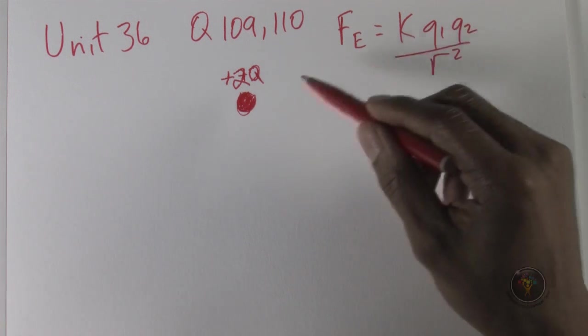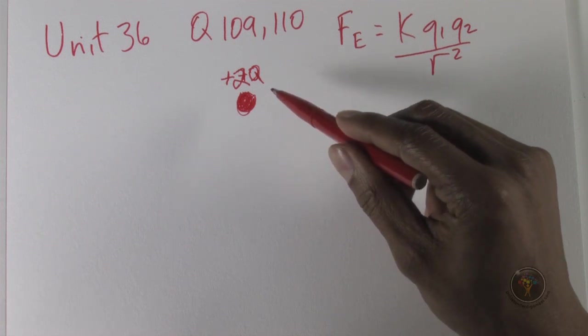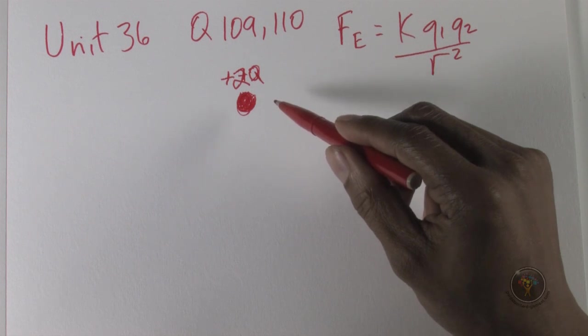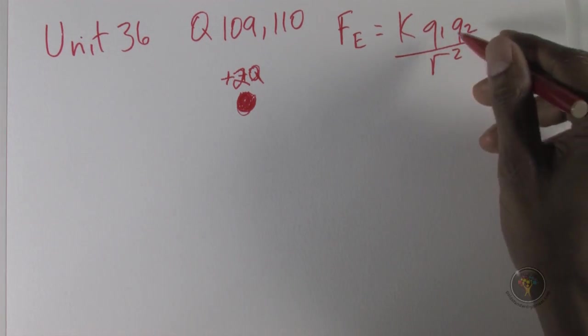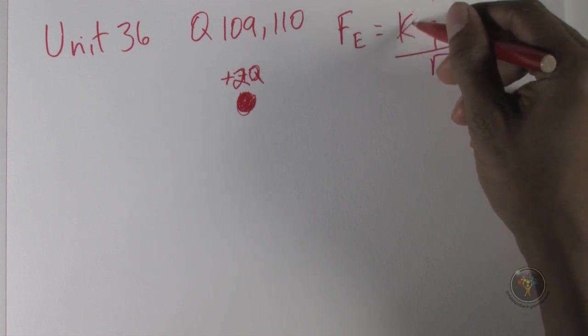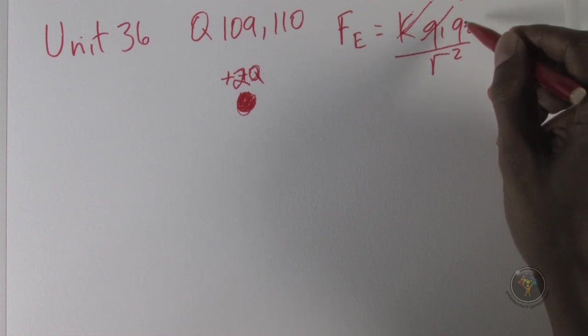So k is not changing and 2q is not changing. On each side of 2q, we have a force that repels 2q, and that force is going to be proportional to q over r squared. This is going to be constant, so what it's really going to be proportional to is q over r squared.